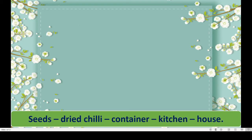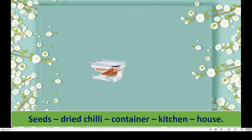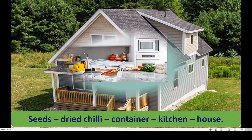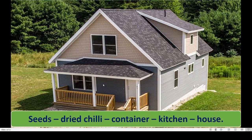See here — we will arrange them. First seeds. Then seeds are inside the dried chili. Now dried chili we keep inside the container. And the container is inside our kitchen. Kitchen is inside our house. Now we moved from smallest to biggest. I hope you understood.